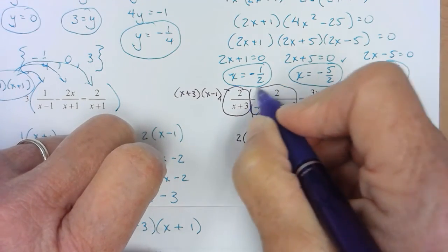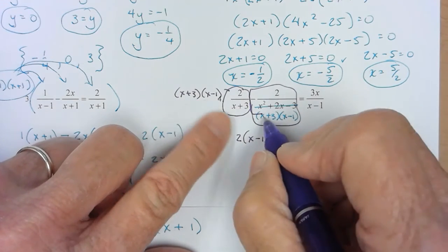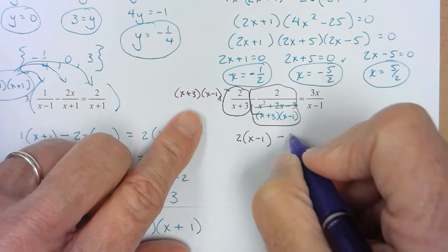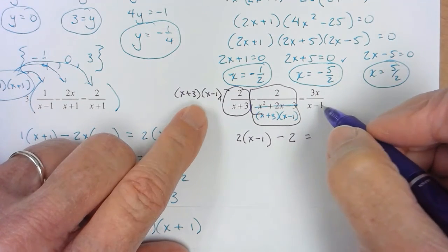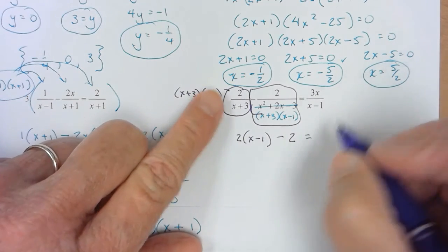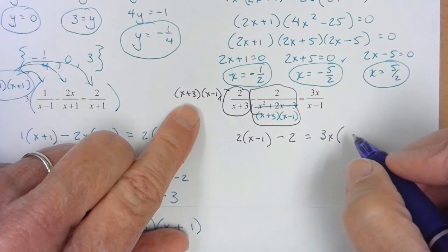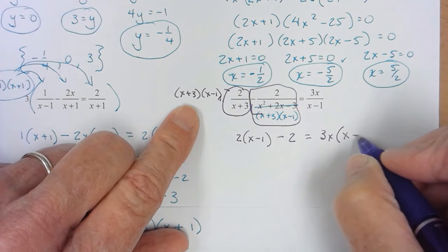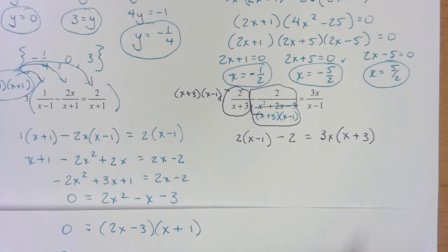Now the next fraction. If I multiply this times this, the denominators eliminate. So all I have is a 2. My equal sign and me multiplying this times the last one. It looks like I'm going to have a 3x. A parenthesis. So I'm going to have a 2x plus 3.